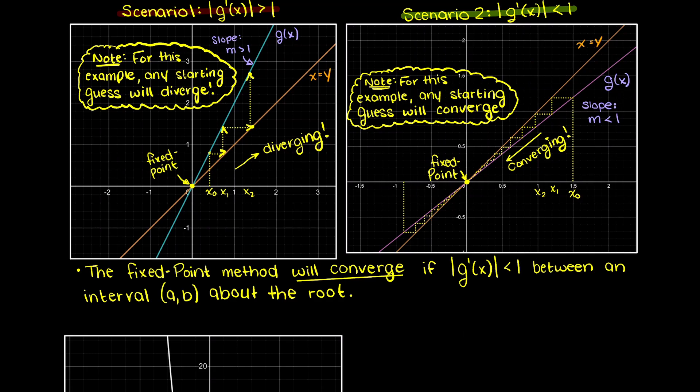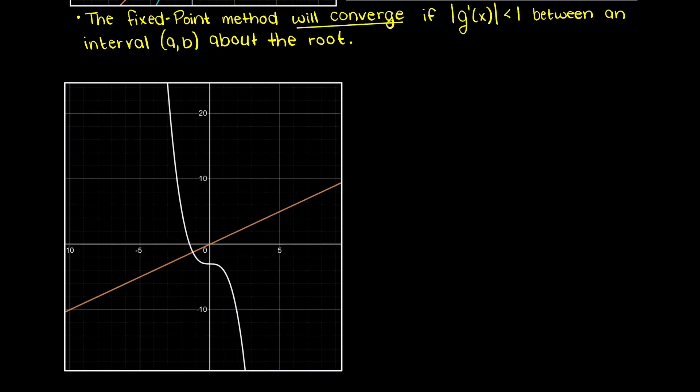So now that we have a better understanding of our fixed point method's convergence criteria, let's look at another example. Here we have g(x) = x³ - 3. As you can see, no matter what initial guess we use, we cannot get our fixed point method to converge. Well why is that?